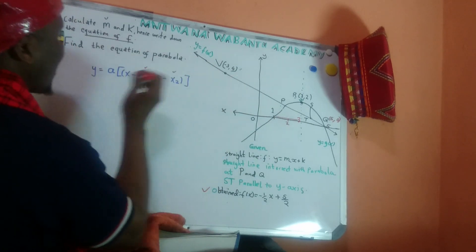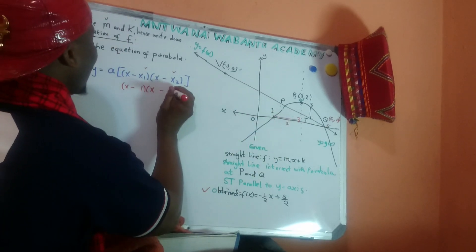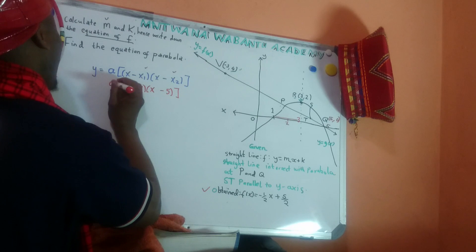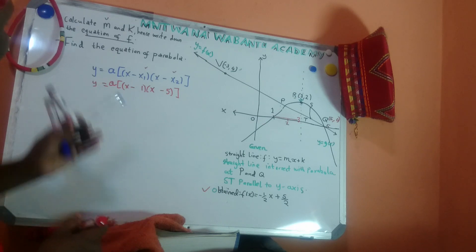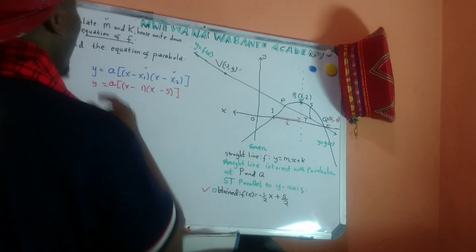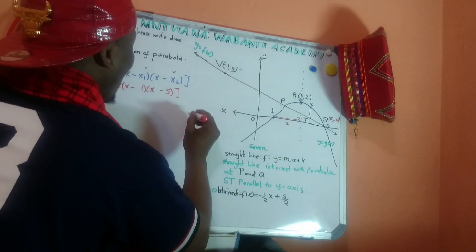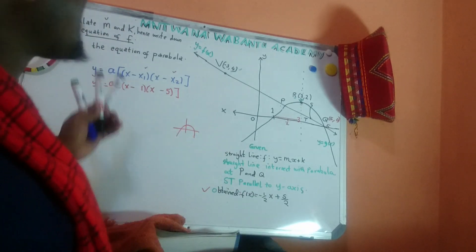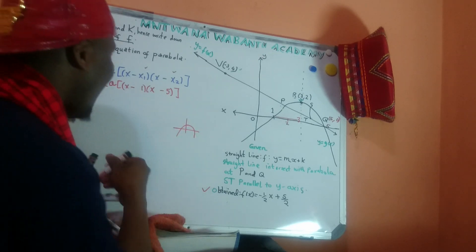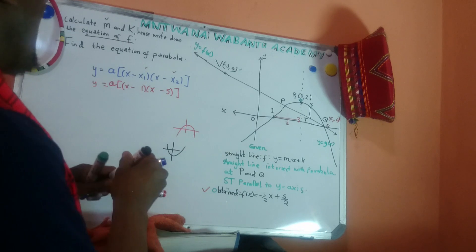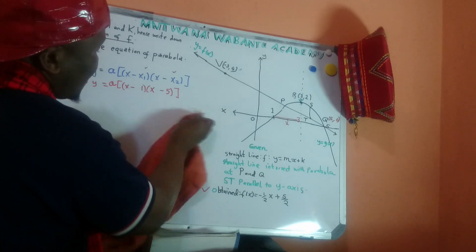What is 'a'? 'a' is the coefficient of the quadratic. For this case, 'a' must be negative, because this parabola opens downward. Whenever 'a' is negative, the parabola opens downward. So before I even solve it, I know 'a' has to be negative.